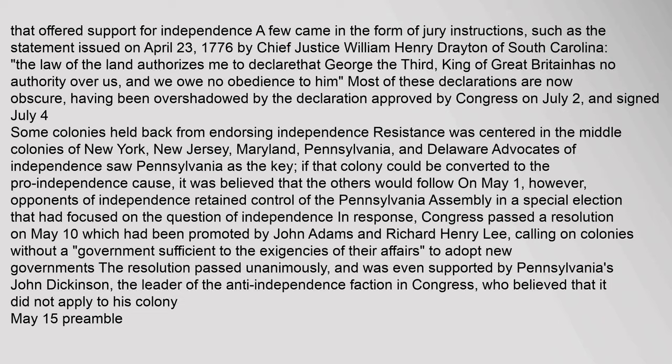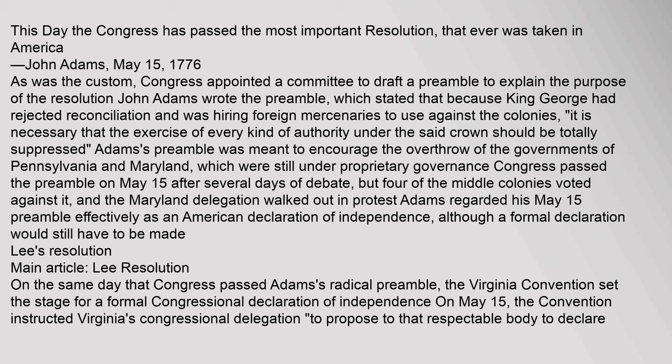John Adams declared: 'This day the Congress has passed the most important resolution that ever was taken in America,' on May 15, 1776. As was the custom, Congress appointed a committee to draft a preamble to explain the purpose of the resolution. John Adams wrote the preamble, which stated that because King George had rejected reconciliation and was hiring foreign mercenaries to use against the colonies, 'it is necessary that the exercise of every kind of authority under the said crown should be totally suppressed.' Adams's preamble was meant to encourage the overthrow of the governments of Pennsylvania and Maryland, which were still under proprietary governance. Congress passed the preamble on May 15 after several days of debate, but four of the middle colonies voted against it, and the Maryland delegation walked out in protest. Adams regarded his May 15 preamble effectively as an American declaration of independence, although a formal declaration would still have to be made.